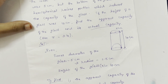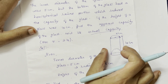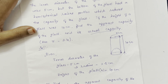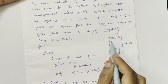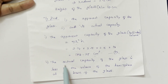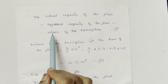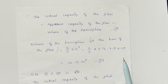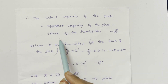Next, the actual capacity. The actual capacity equals the apparent capacity minus the volume of the hemisphere at the base. In the raised hemispherical portion, you cannot fill juice. So the actual capacity of the glass is equal to the apparent capacity minus the volume of the hemisphere.